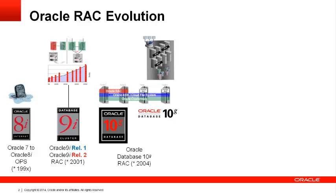By the time Oracle introduced Oracle Database 10g Release 2, customers were creating shared infrastructure clusters based on Oracle RAC that provided not just high availability and scalability, but also flexibility and agility.